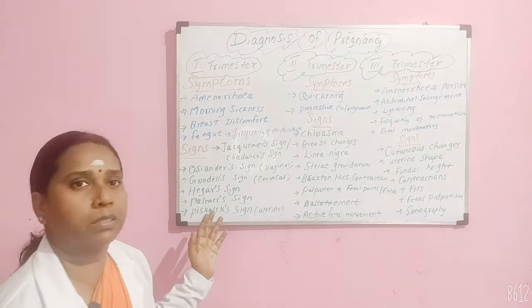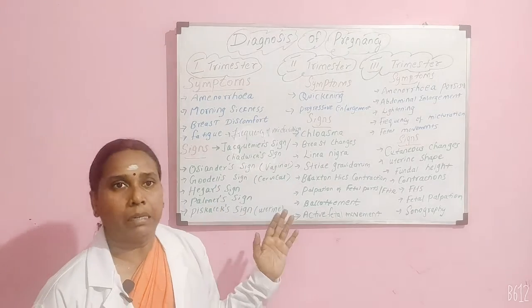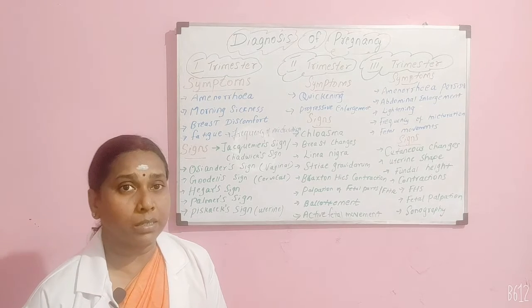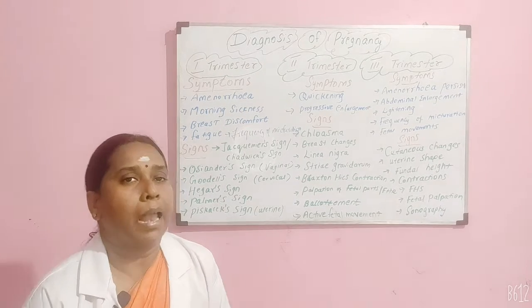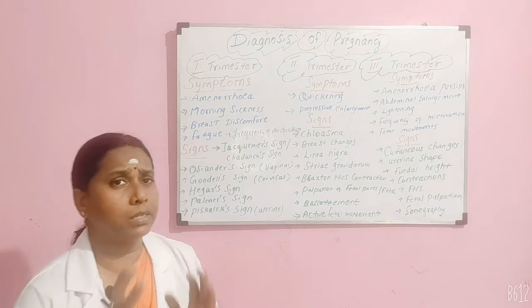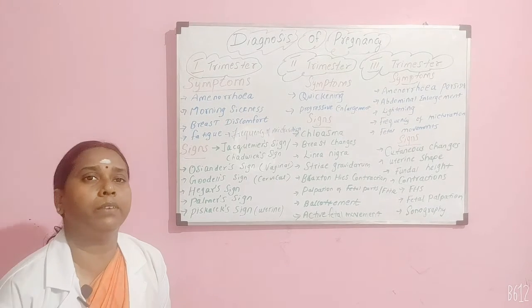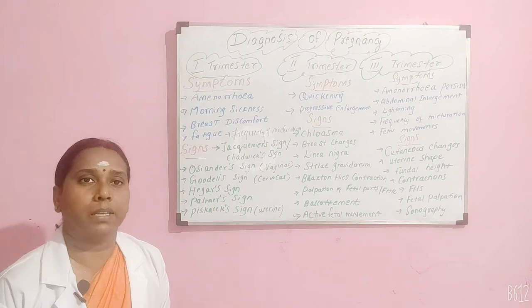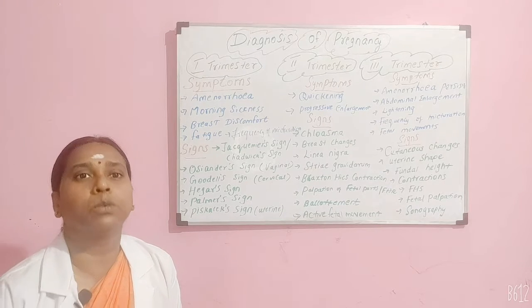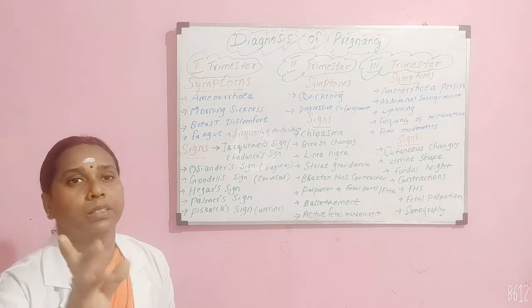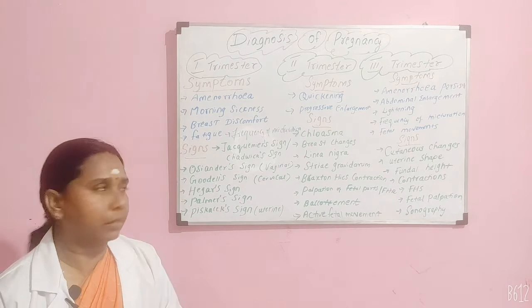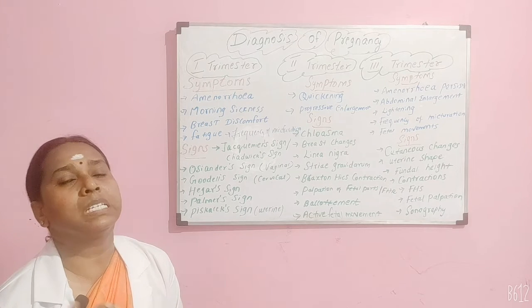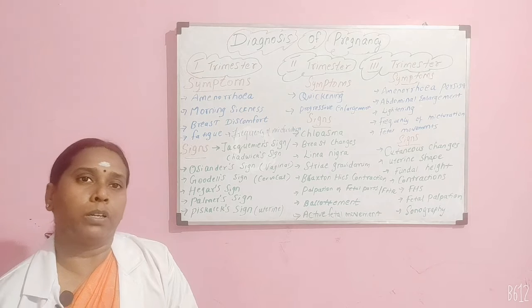When we come to the signs of the first trimester, the first sign is the Jacquemus sign, also called the Chadwick sign — the bluish discoloration felt in the anterior vaginal wall. Then we have the Oseander sign, also called the vaginal sign. If your examiner asks about the vaginal sign during the first trimester, it is the Oseander sign — the pulsation felt in the lateral fornices of the vagina.